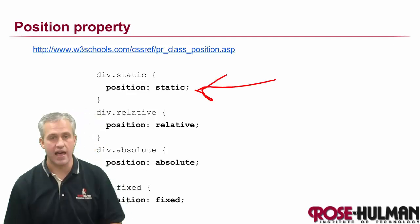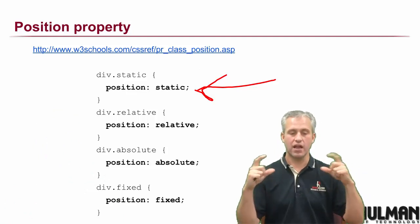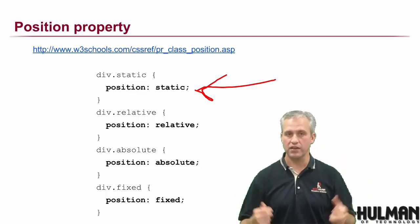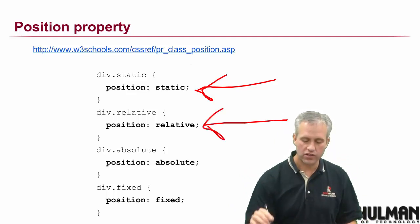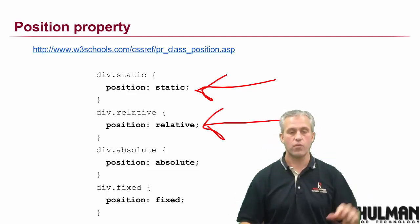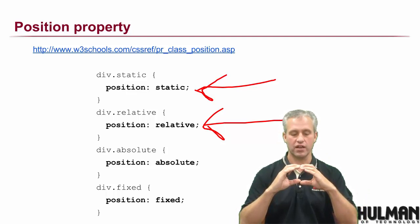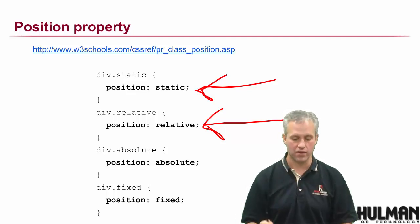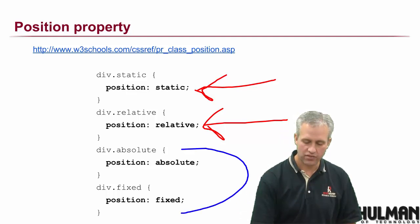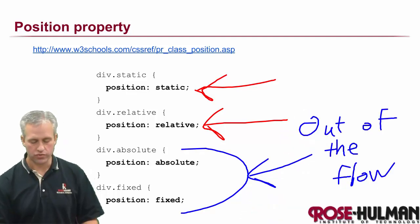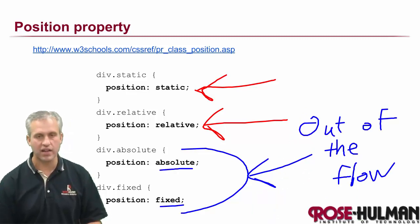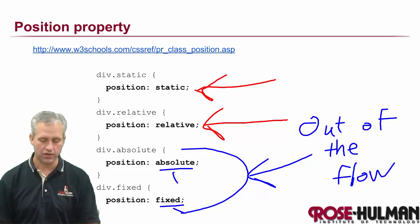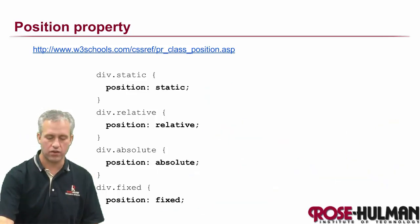The default position value is static, which means you're in the flow. Inline elements ignore width and height; block elements have people above and below. Next is relative, which is similar to static but lets you move yourself from that spot. Then there are the big two — absolute and fixed — which are out of the flow. They kind of hover on top, and the difference between them is what they're attached to.